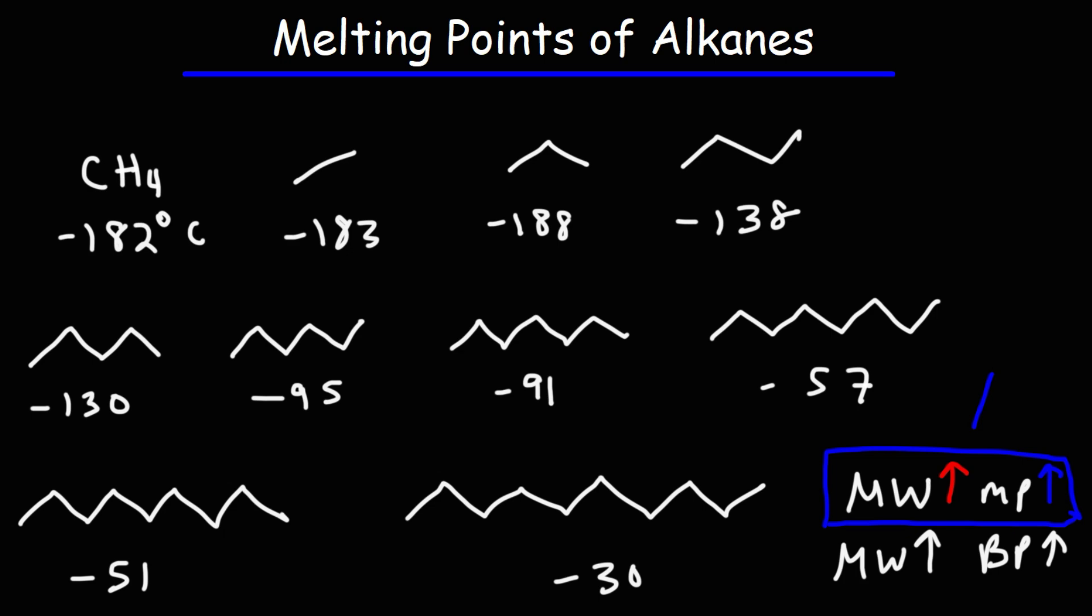Now there's something else that we need to pay special attention to, and that is the drops in the melting point between certain alkanes. Notice that as we go from propane to butane, there is a huge increase in the melting point. It went from negative 188 to negative 138. That's an increase of 50.